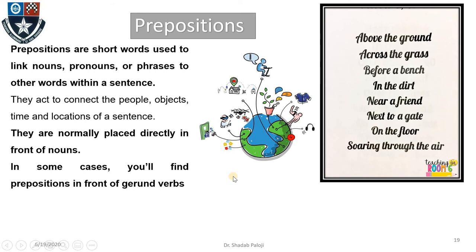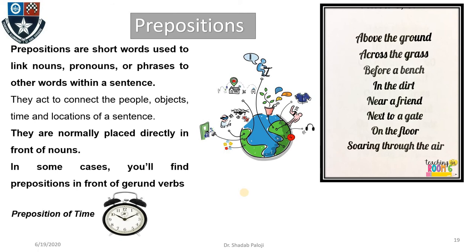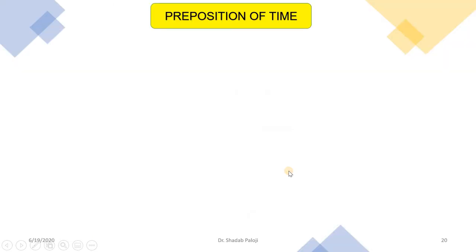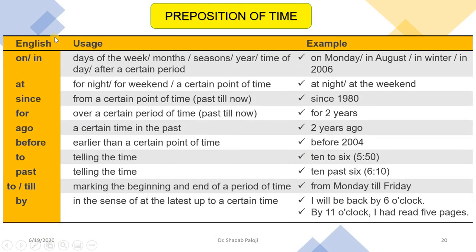In some cases you will find that a preposition is in front of a gerund verb — a verb that has '-ing' in it, such as 'having' or 'thinking.' Many times prepositions are found in front of gerund verbs and it can still be called a preposition. Now we have varieties of prepositions: preposition of time, and preposition of place — that is, position and direction. Let us look at the list of prepositions of time in English.